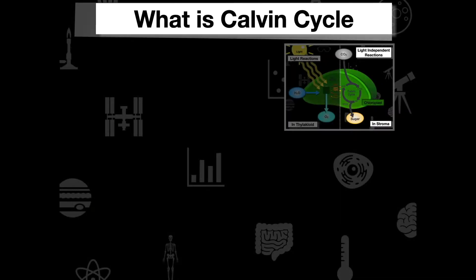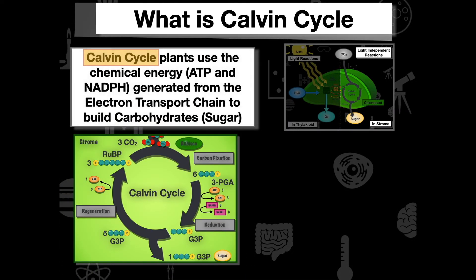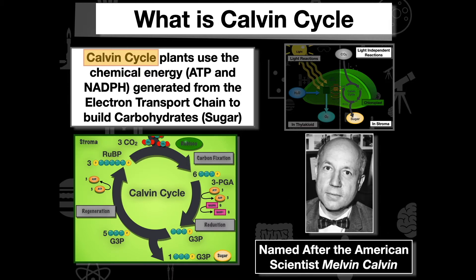The Calvin cycle is a cycle that plants use for chemical energy. They use ATP and NADPH generated from the electron transport chain to build carbohydrates — the sugars that are then sent to the mitochondria to eventually make more ATP. This cycle is named after American scientist Melvin Calvin.